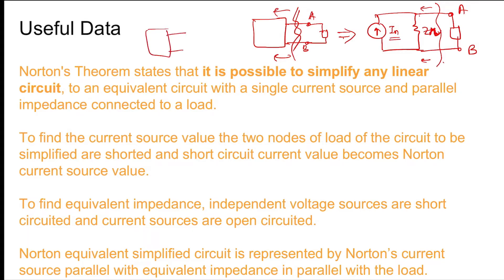To find the value of the current source, we remove the load and short the terminals, then find the value of this short-circuit current, which is the same as the value of the Norton current source.